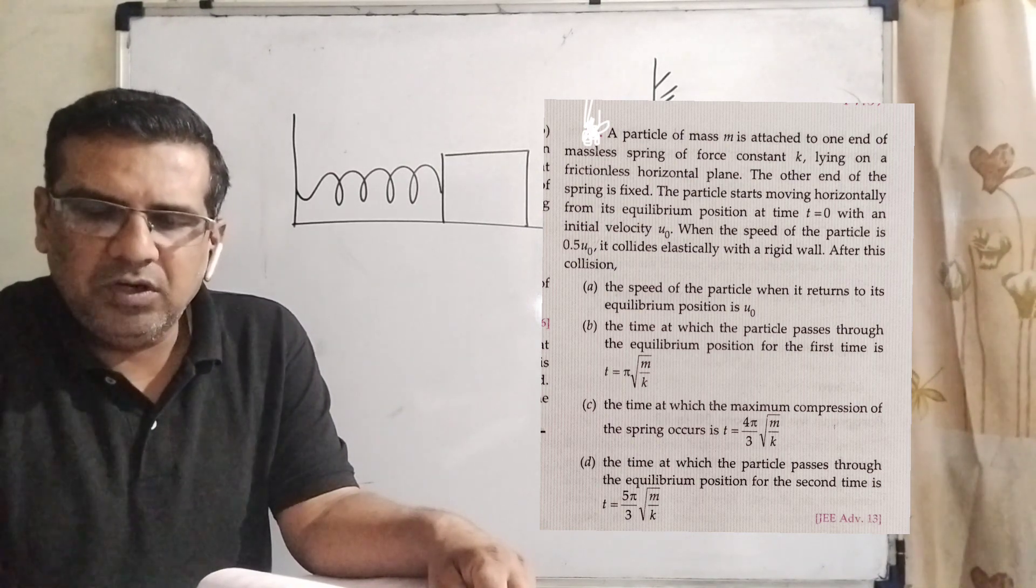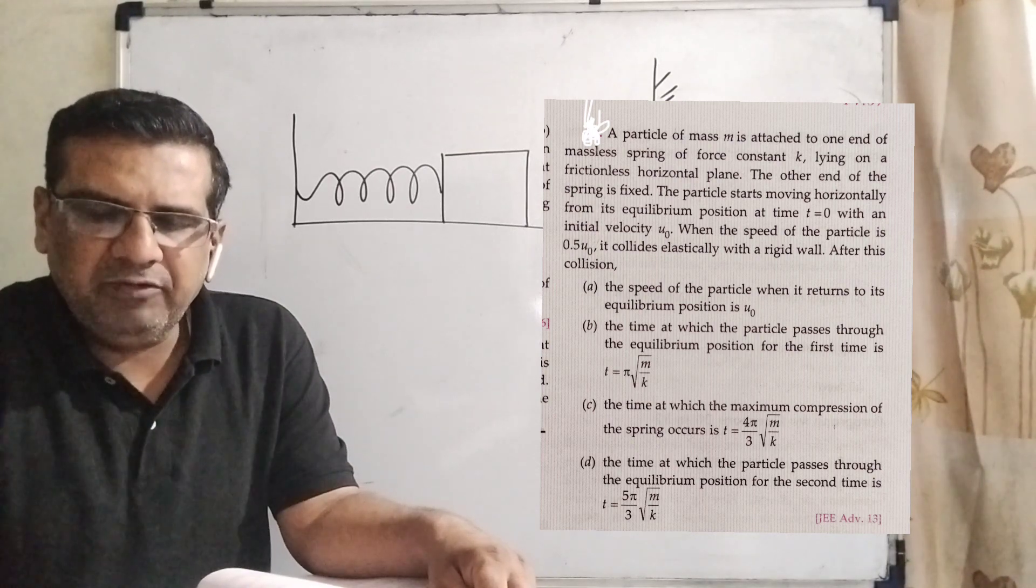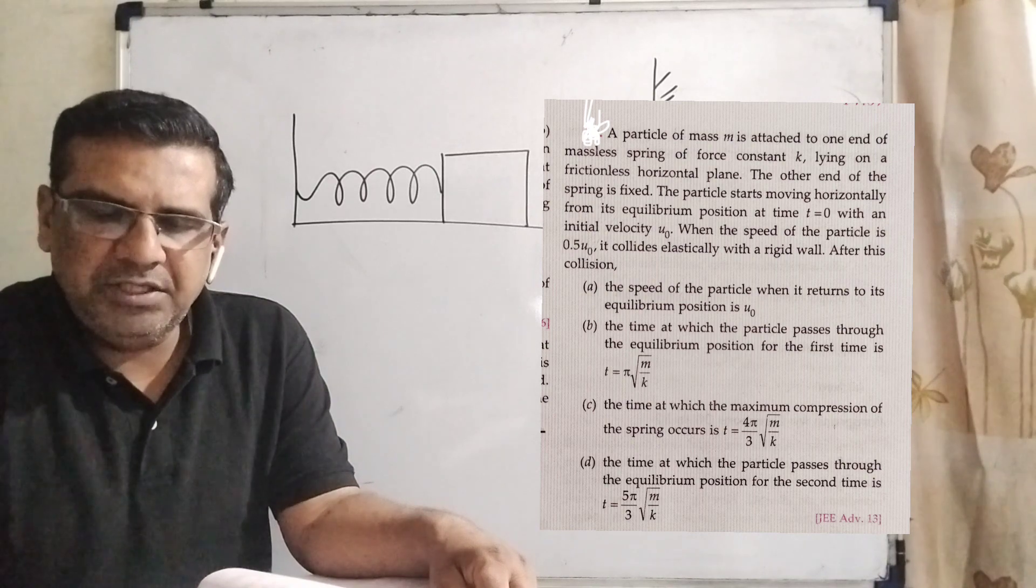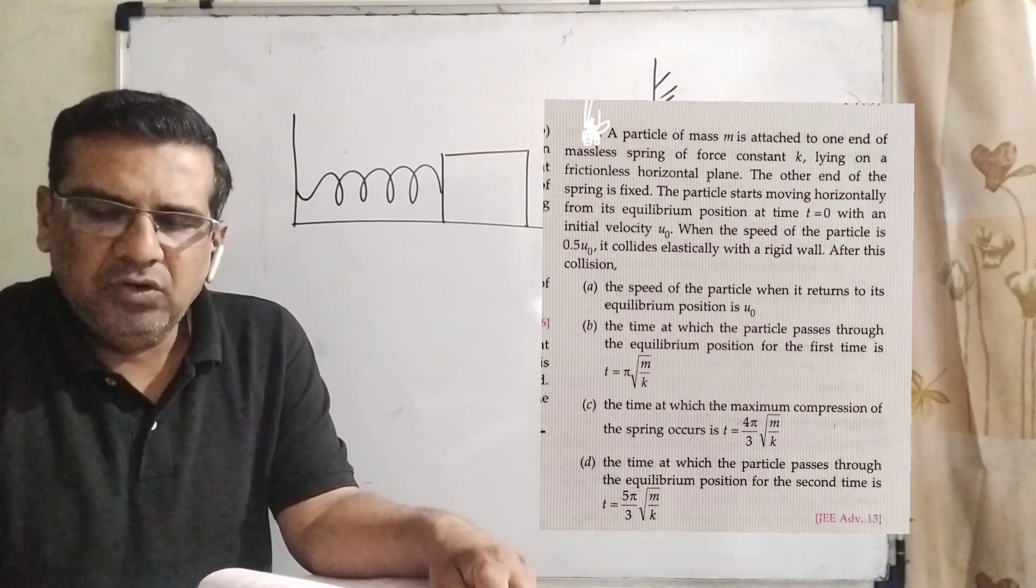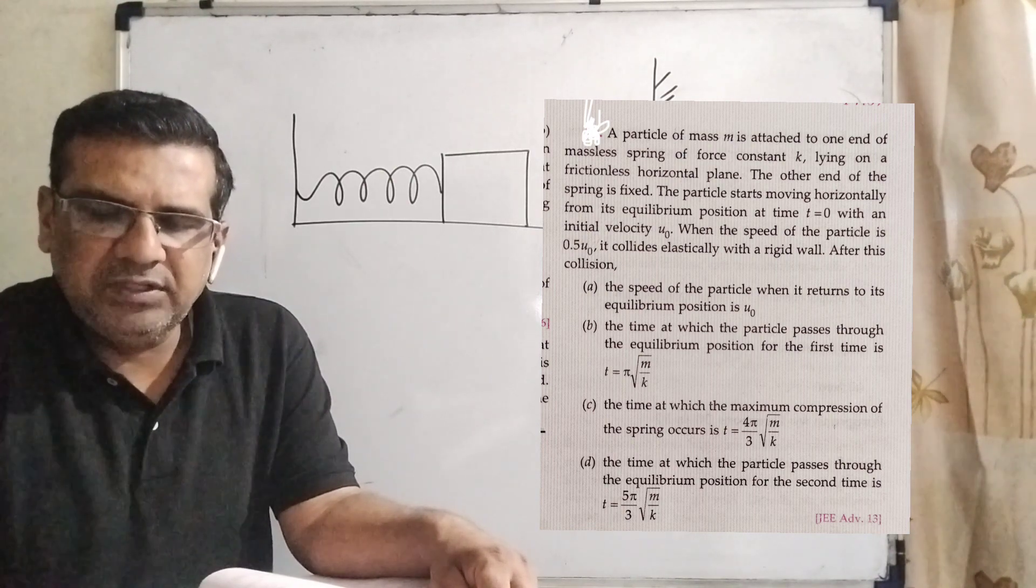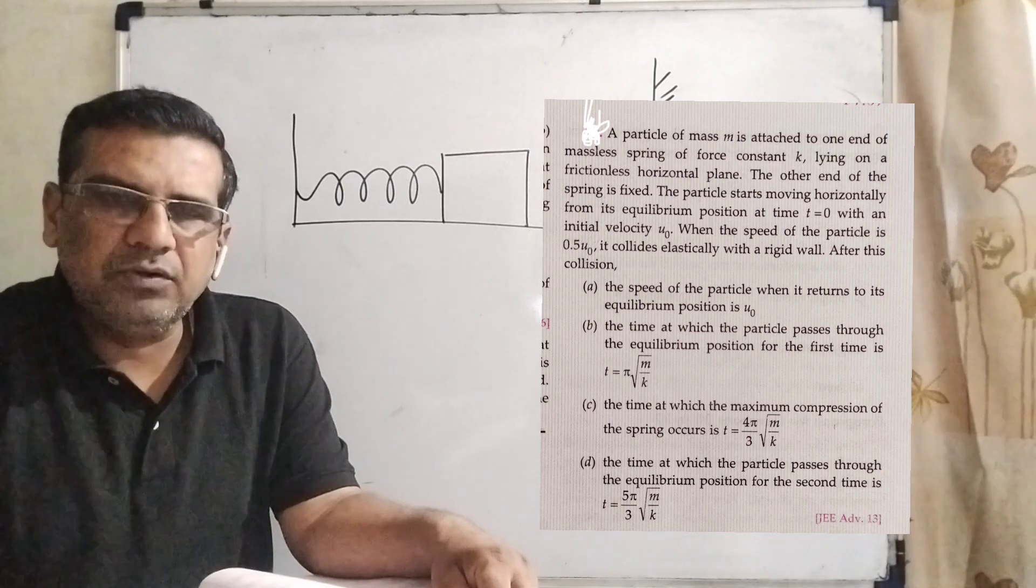The particle starts moving horizontally from the equilibrium position at time t equal to 0 with an initial velocity u0. When the speed of the particle is 0.5 u0, it collides elastically with a rigid wall. After this collision, here are the four options.